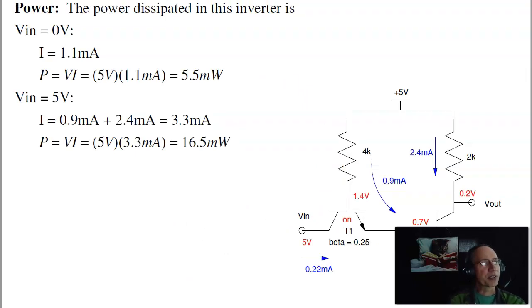The power consumption. I've got 5 volts supplying 0.9 plus 2.4. 5 volts is supplying 3.3 milliamps. That produces 16.5 milliwatts. That's when you're on. When it's off, it's 5.5 milliwatts. That may not seem like a lot, but it is a problem. When you deal with computers that have millions of gates, I can't handle 1 million times 16 milliwatts. That's 16 kilowatts of heat. The computer's going to get hot. I need a different technology. That'll come up a little bit later when we get CMOS technology.